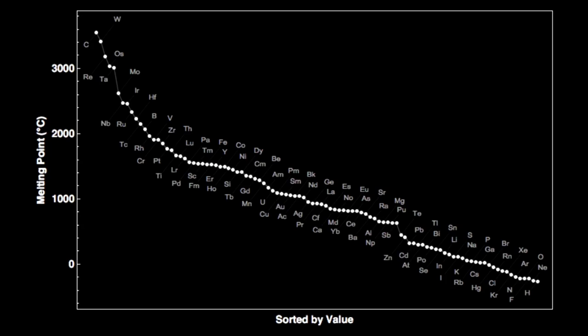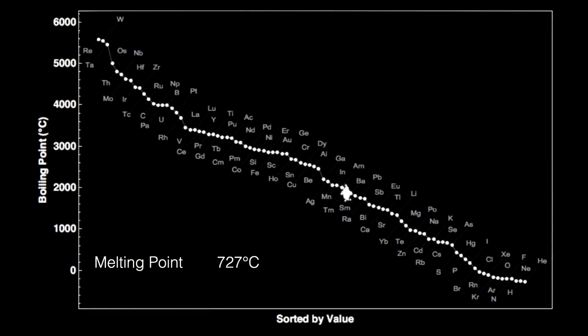Barium has a fairly low melting point at 727 degrees Celsius, or about 1,340 degrees Fahrenheit. It boils at 1,870 degrees Celsius — that's 3,398 degrees Fahrenheit — which is 1,443 degrees C above its melting point.